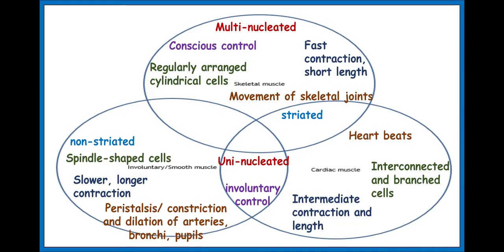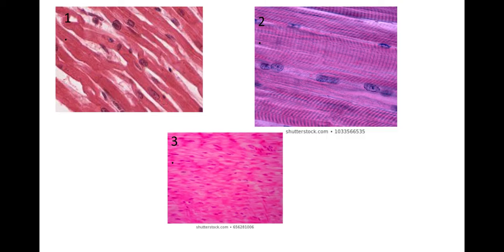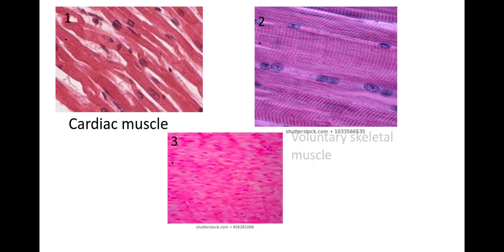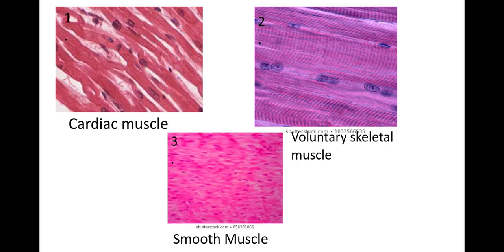Now let's look at images taken from a microscope. Here are three images of the different muscle types, and you need to be able to identify these in an exam — it hasn't come up for a while, so it may appear soon. Pause and try to identify each one. The first is cardiac muscle — you can see the interlocking junctions. The second is voluntary or skeletal muscle, with a very obvious stripy pattern. The third is smooth muscle, with spindle-shaped cells visible.